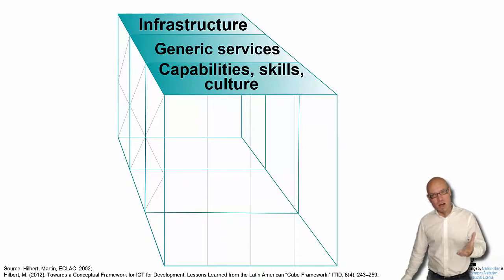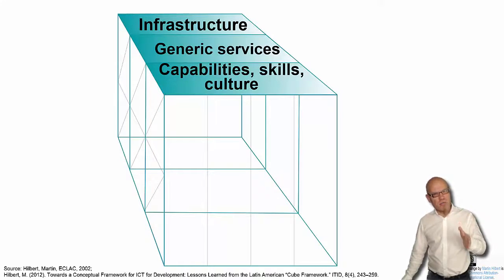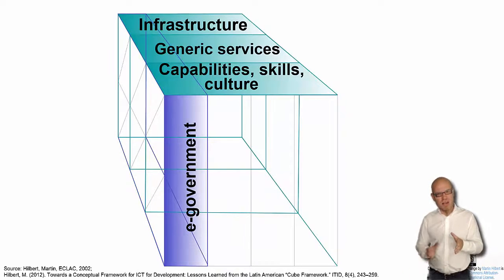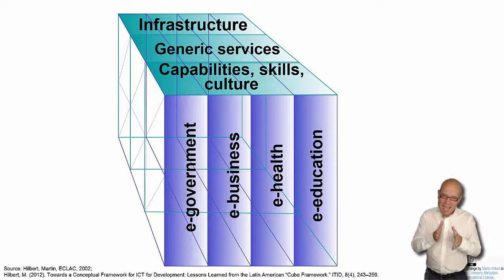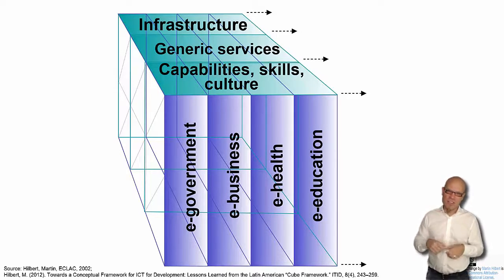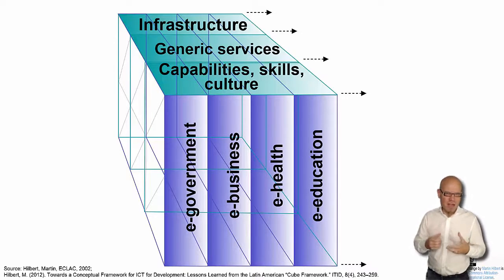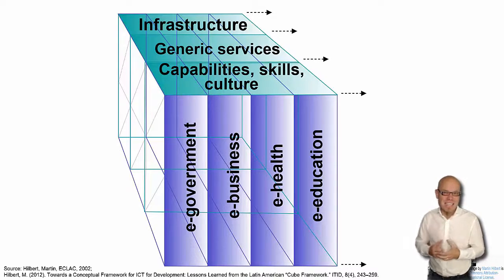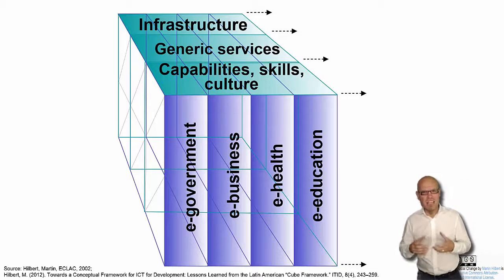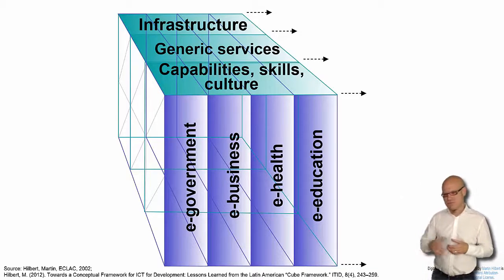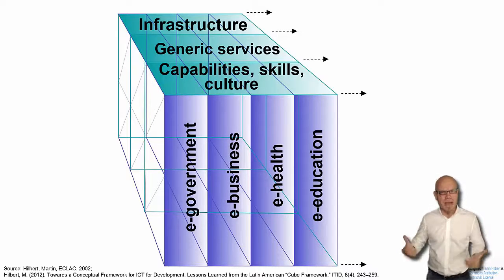We use this combination of technology in order to put parts of information and communication processes in society into electronic networks. That's why our generation often puts the 'E' in front of it. Future generations won't anymore, because it's going to be normal that the government uses some kind of information communication technology. But in the meantime, we call this E-government, E-business, E-health, education, E-dating, E-banking, E-security, and E-warfare.